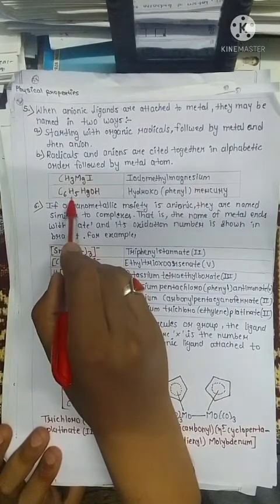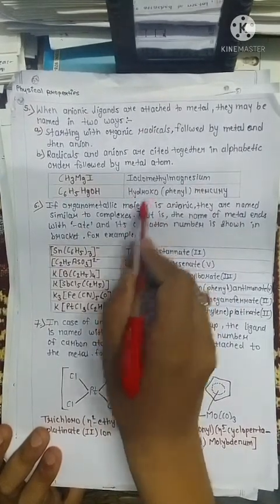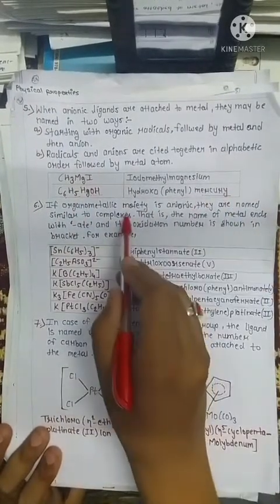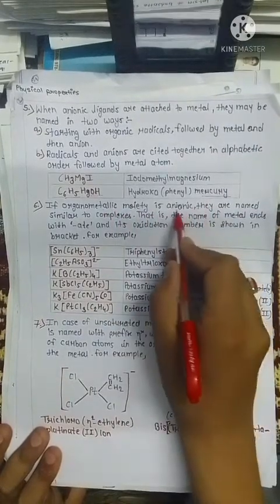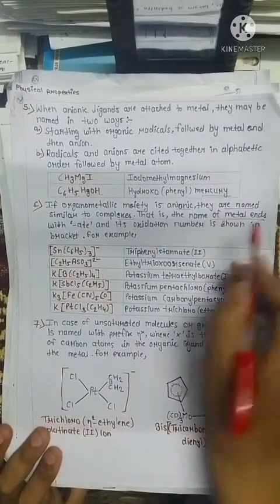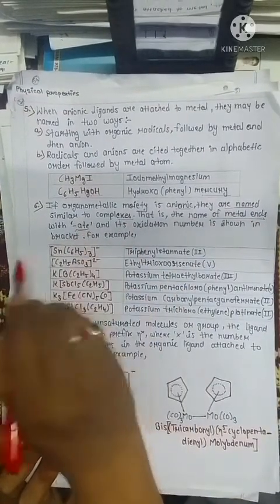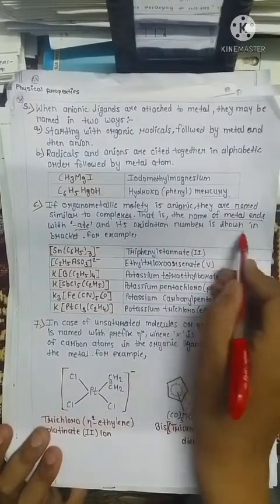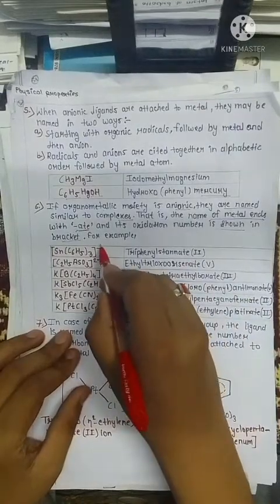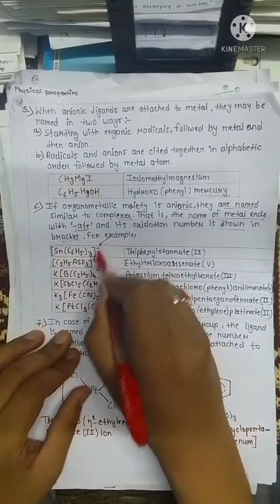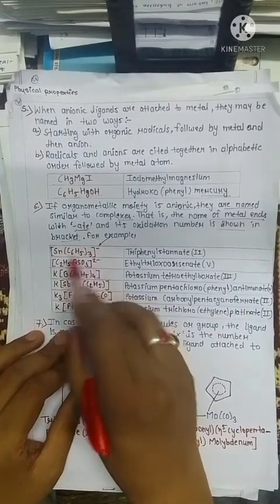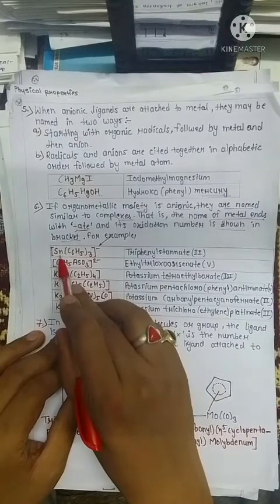In this case, it is written as hydroxyl (for OH), then phenyl, then mercury. If an organometallic moiety is anionic, it is named similar to complexes — the name of the metal ends with -ate and its oxidation number is shown in brackets. Students should note that the negative charge indicates the charge on the overall organometallic compound, not on the metal atom itself.